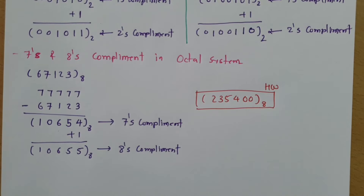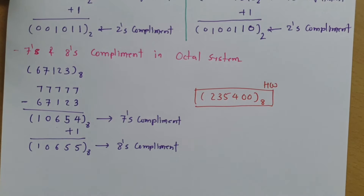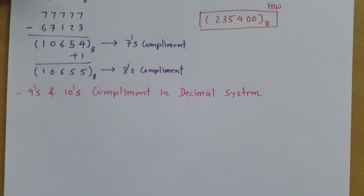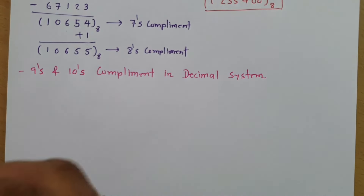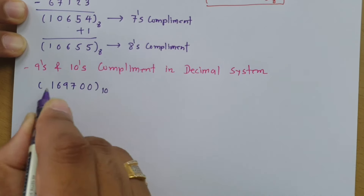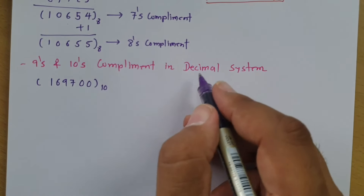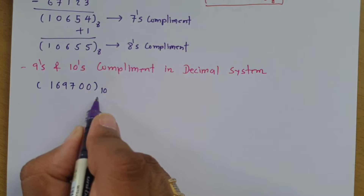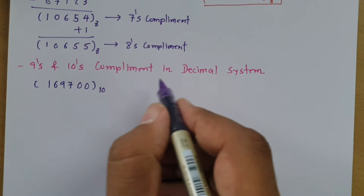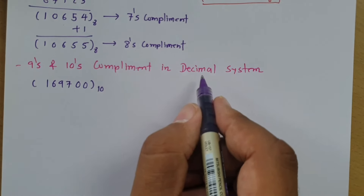Now we will solve a problem based on 9's and 10's complement, which are calculated in the decimal number system. The decimal number system has base 10, and the highest digit is base minus 1, which is 9. The decimal digits are 0 through 9, so the highest digit is 9.